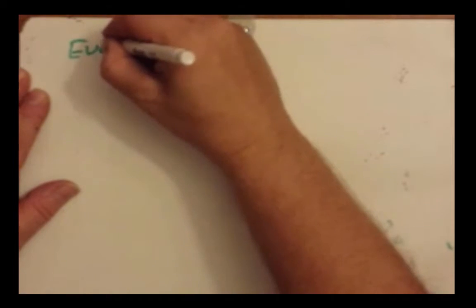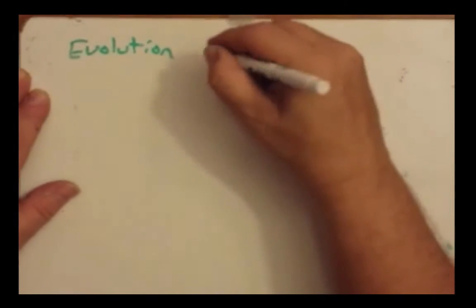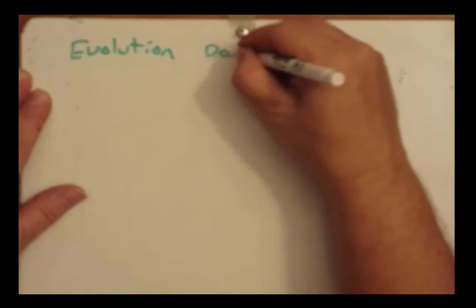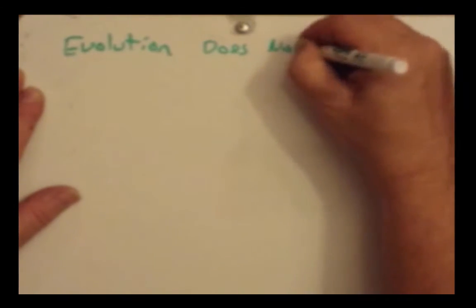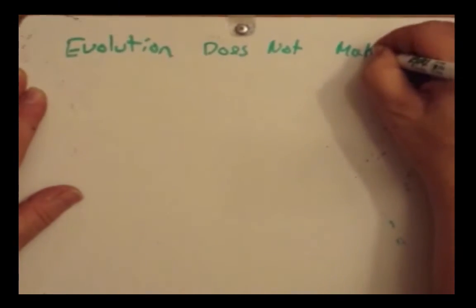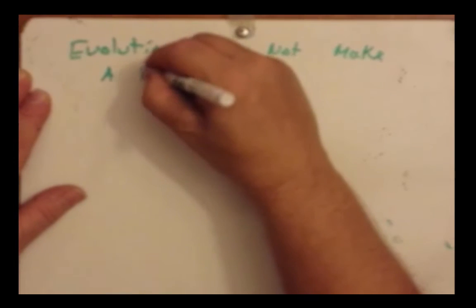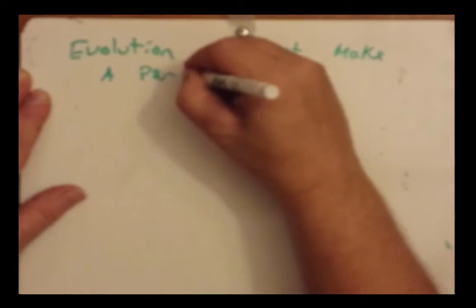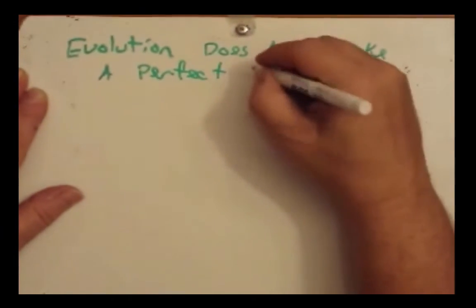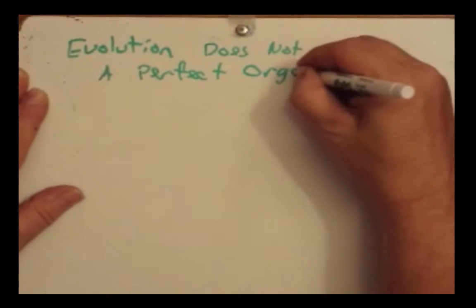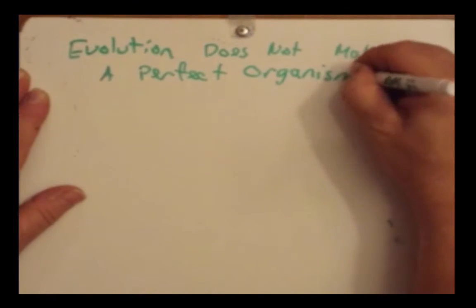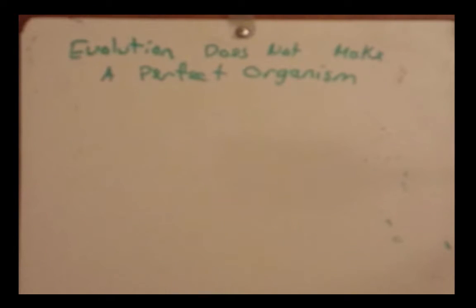The last thing we want to cover is the fact that evolution is not perfect — evolution does not make a perfect organism. There are four reasons your book talks about, and we should talk about all four of them.